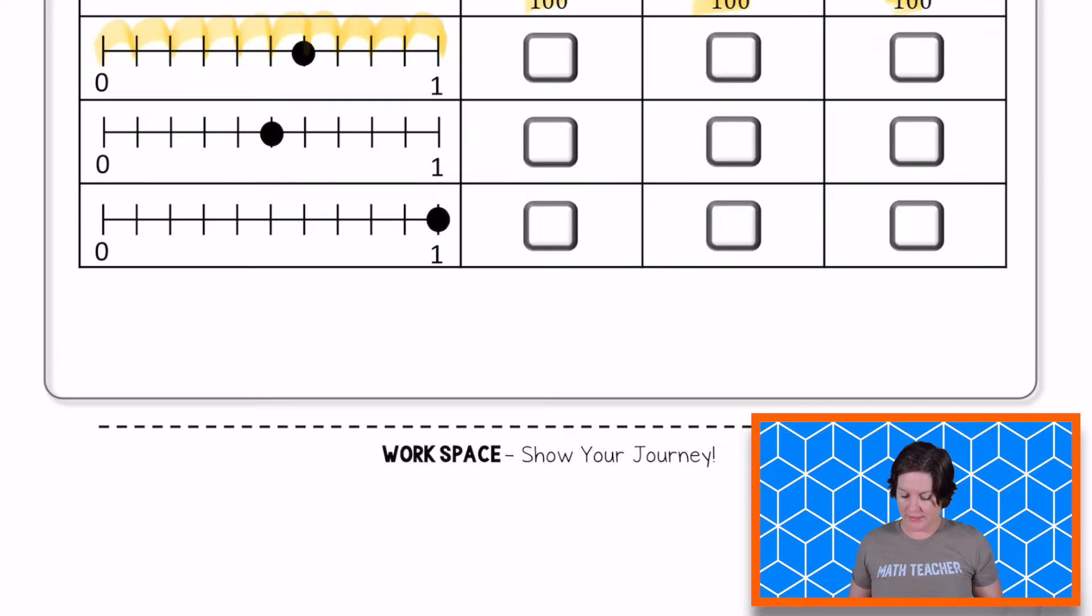So the first one is at six tenths. And I know that if I multiply the denominator by 10, I will get 100 in the denominator. To do that though, I also have to multiply the numerator by 10 to get 60 hundredths. So for the very first fraction, we need to select 60 hundredths, just like that.